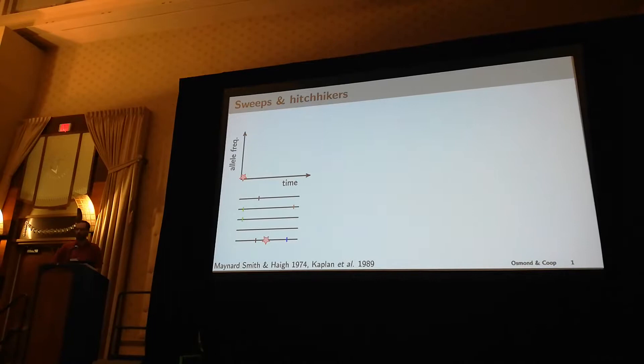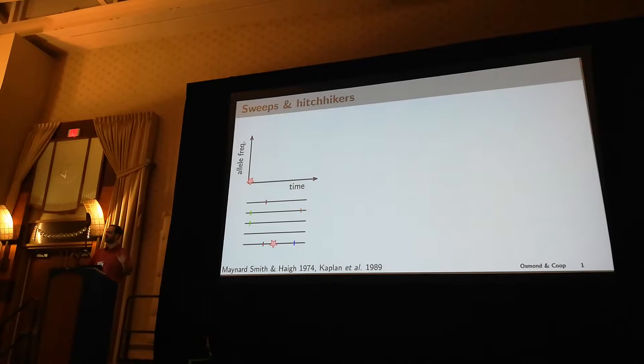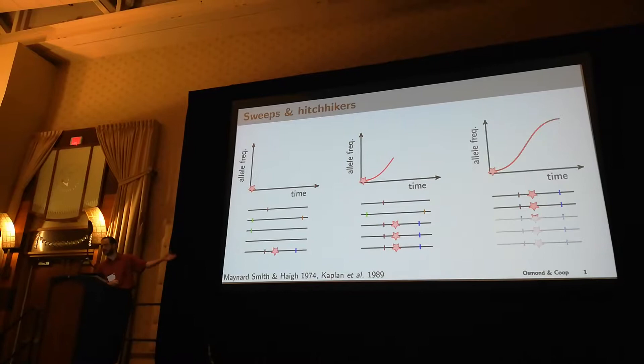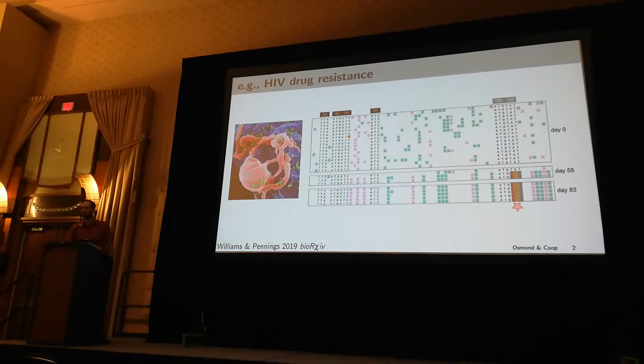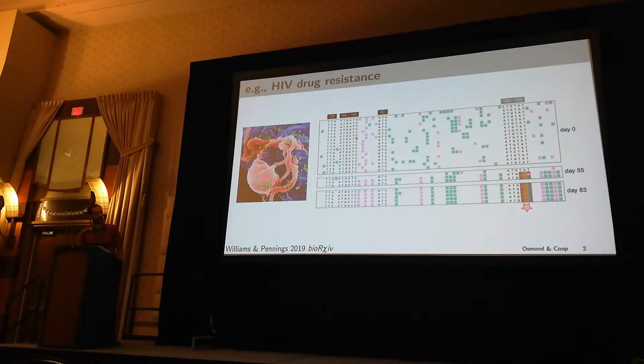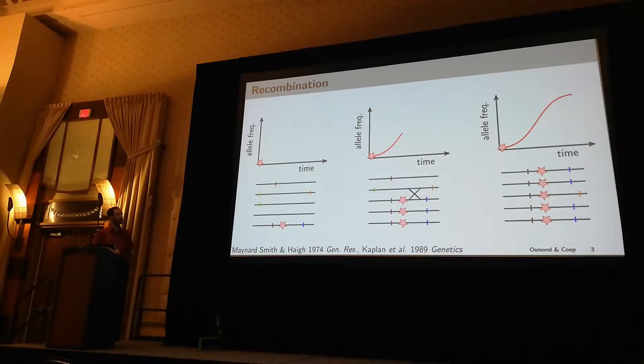Arguably one of the most successful models in population genetics is that of a selective sweep, where a beneficial mutation arises at some point in time, sweeps to high frequency, dragging along its genetic background with it. Here we see an amazing illustration of this process in the HIV population within a patient, where a drug resistance mutation arose and swept quickly to fixation, reducing most of the diversity across the genome.